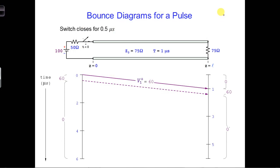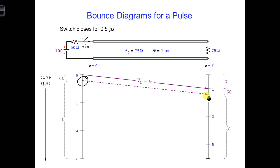Here is the bounce diagram. The dotted line corresponds to the end of the pulse, and it starts after 0.5 microseconds. The load is matched, so there's no reflection. If there was a reflection, you would reflect the dotted line in the exact same way as you would the solid line.